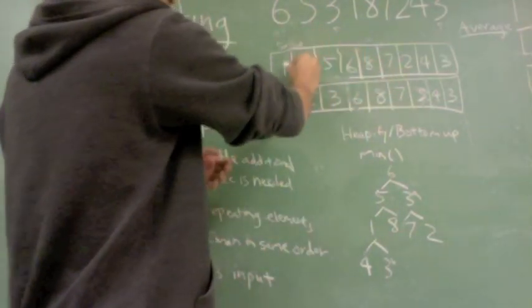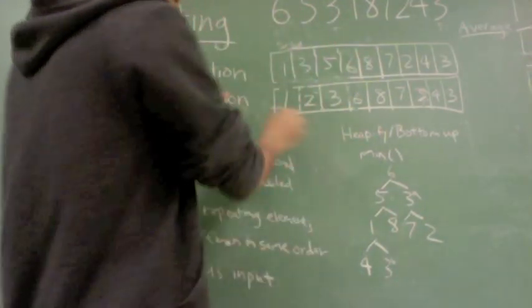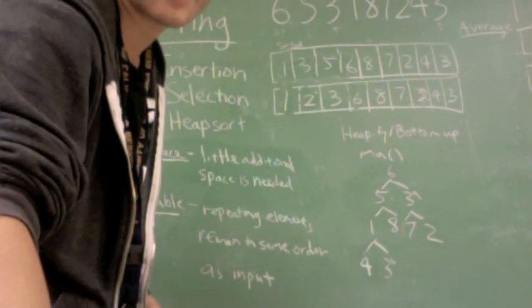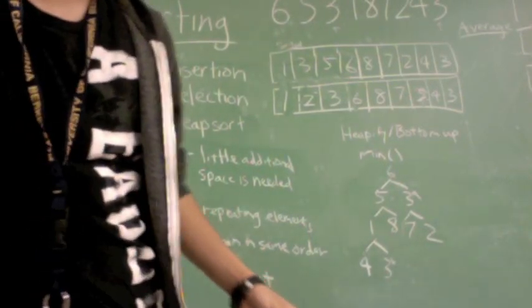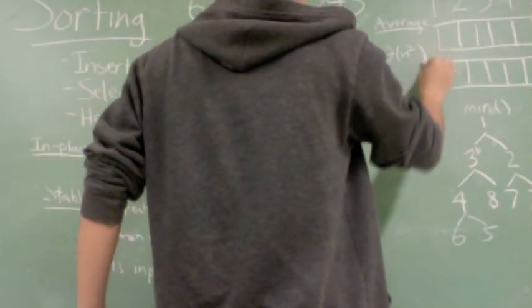First one here is because you've got to move all the larger keys once you insert something in. Here, you've got to find the minimum key, which can be time consuming. So on average, these two algorithms run in O of n squared on average.